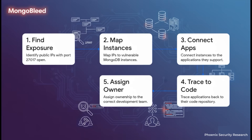Just scanning for vulnerable versions is not enough. To respond effectively, you need context — you need to prioritize based on actual exposure. Start by finding your public IPs with port 27017 open, then map those to specific vulnerable MongoDB instances. From there, figure out which applications use those databases, trace those apps to their code repos, and get this in front of the right development team. That is how you get this fixed fast.